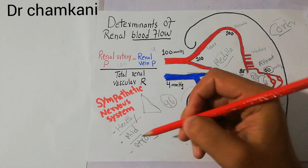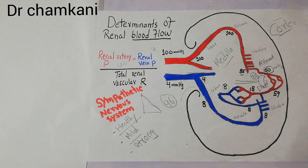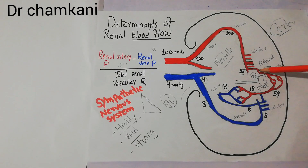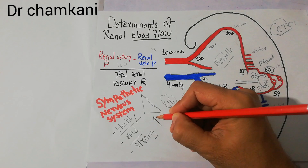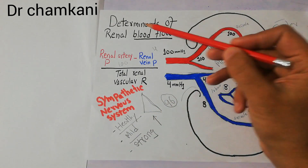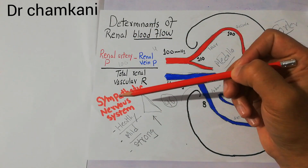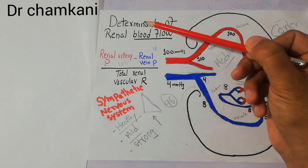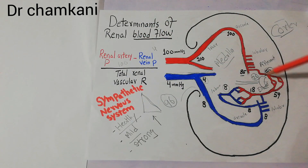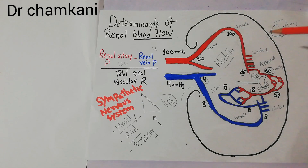Strong activation of the sympathetic nervous system, which occurs in cerebral ischemia or severe hemorrhage, can strongly constrict these arterioles and increase the resistance in these areas very much, which will decrease renal blood flow. Once constriction occurs at these sites, the GFR will decrease, the filtration process will decrease, and this will ultimately have an effect on urine formation.